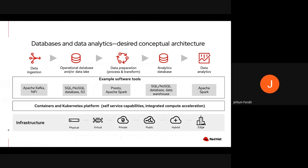The next step is to prepare, process, and transform the data using tools such as Presto and Apache Spark, and store the processed and organized data into an analytical database, which could be SQL or NoSQL, or into a data warehouse. The final step is to perform analytics on the data for business insights and data visualizations, and tools like Apache Spark could be used for this. Organizations may also choose to do AI/ML as a next step after data analytics.